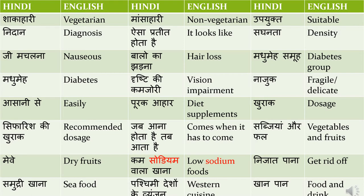'Aisa prateet hota hai' means 'it looks like' or 'it seems'. Usually the doctor will say 'aisa prateet hota hai ki aapke paas pehle se hi nidan hai' — something like that. 'Saghantha' means density — for example, 'aapke haadyon ki saghantha bahut kamzor hai' means the density of your bones is very weak. 'Jee machalna' means nauseous, and 'balo ka jharna' means hair loss. These are usually symptoms stated by the patient, so you will have to convert Hindi into English.